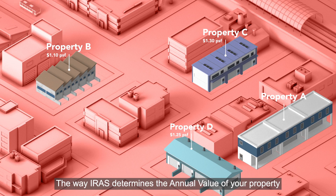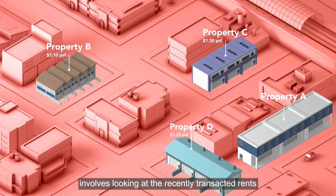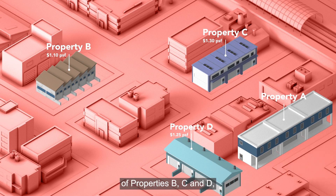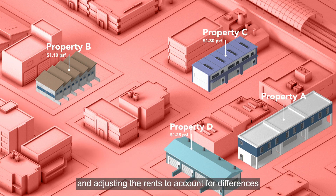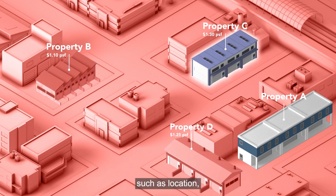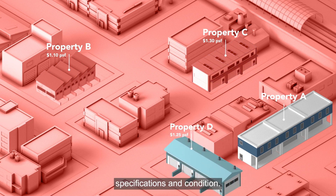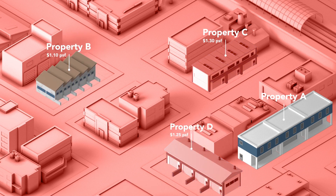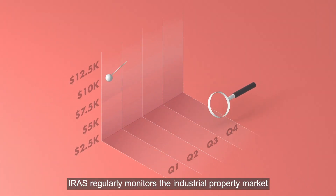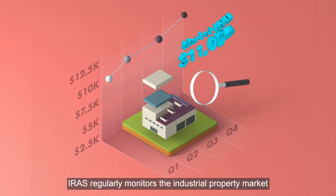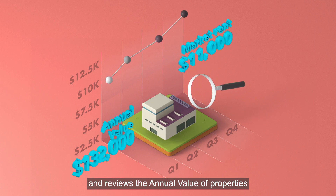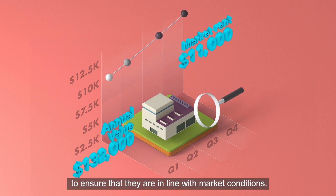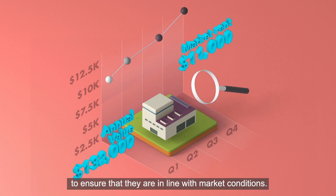The way IRAS determines the annual value of your property involves looking at the recently transacted rents of properties B, C and D, and adjusting the rents to account for differences such as location, size, specifications and condition. IRAS regularly monitors the industrial property market and reviews the annual value of properties to ensure that they are in line with market conditions.